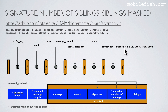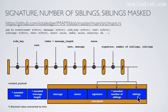These three values — the signature, the number of siblings, and the siblings — are absorbed and the transformation function is applied. After the transformation function is applied, the mask signature is stored in this field, the mask number of siblings is stored in this field, and the mask siblings are stored in this field. The complete mask payload is now created.